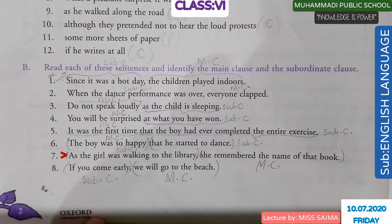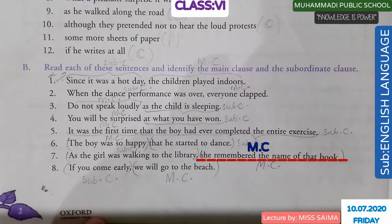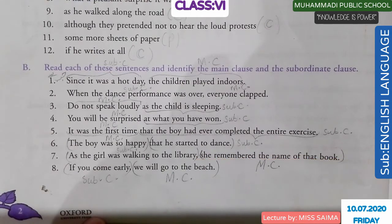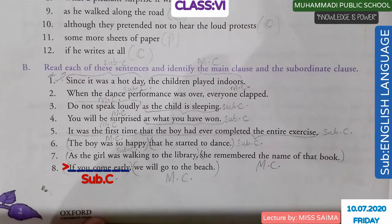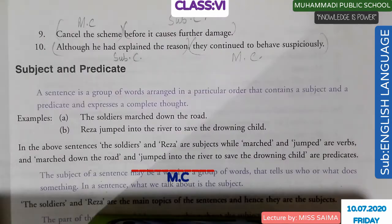Seven: 'As the girl was walking to the library' is the subordinate clause and 'she remembered the name of that book' is the main clause. Eight: 'If you come early' is the subordinate clause and 'you will go to the beach' is the main clause.